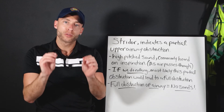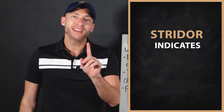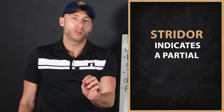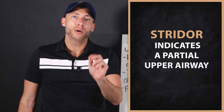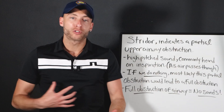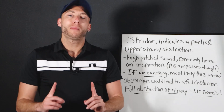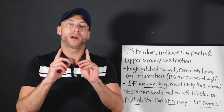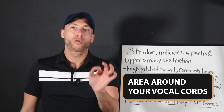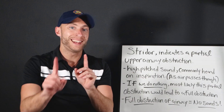If we hear the sound stridor, that indicates a partial upper airway obstruction. Remember, the lungs are our lower airway. We're talking about the upper airway — the area around your vocal cords. This is our upper airway.